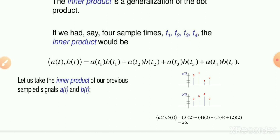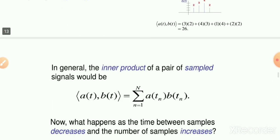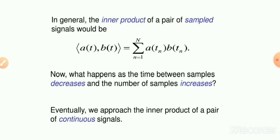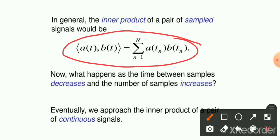For the two signals, the inner product becomes: 3×2 + 4×3 + 1×4 + 2×2 = 6 + 12 + 4 + 4 = 26. This can be written as a summation: the sum from n=1 to 2N of a(nT)·b(nT). If the time between samples decreases and the number of samples increases, this discrete summation represents a continuous signal.